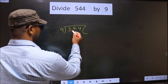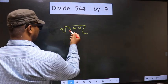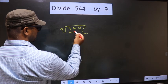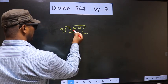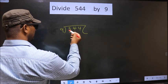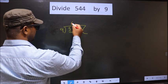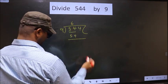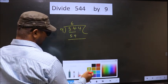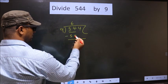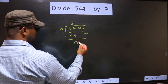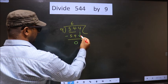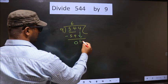Now, here we have 5. 5 is smaller than 9, so we take two numbers — that is, 54. When do we get 54 in the 9 table? 9 times 6 is 54. Now you subtract: 54 minus 54 is 0. Now bring down the beside number — that is, 4 down.